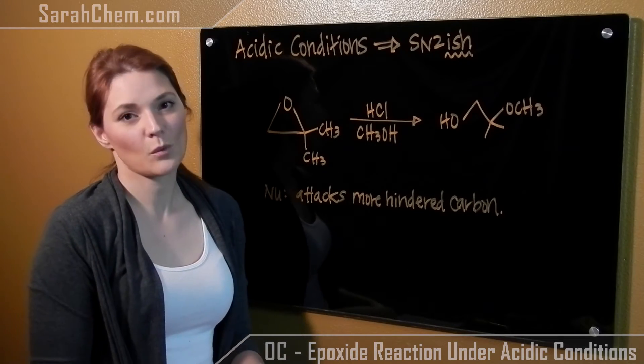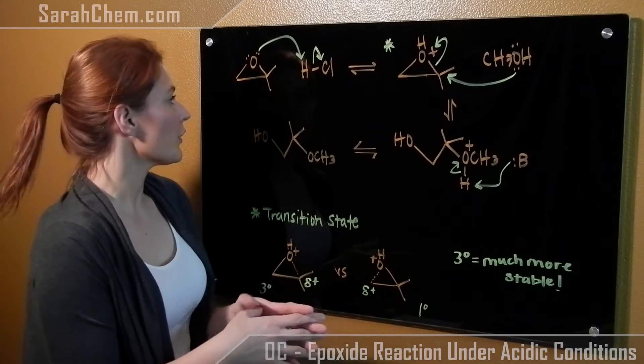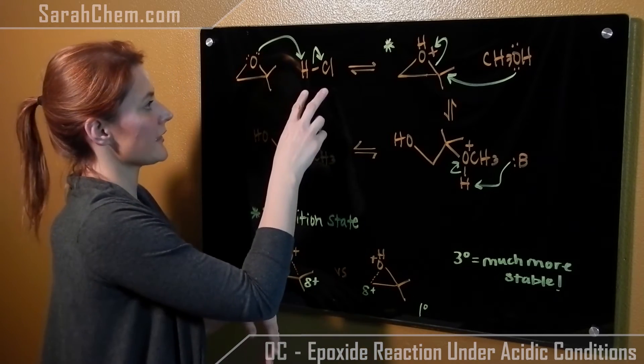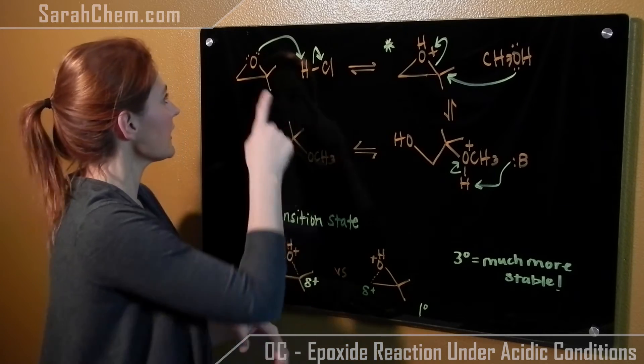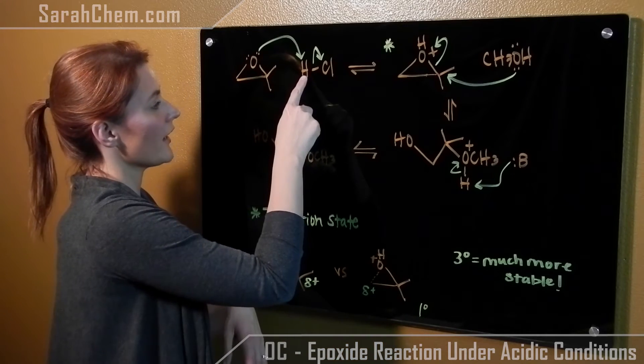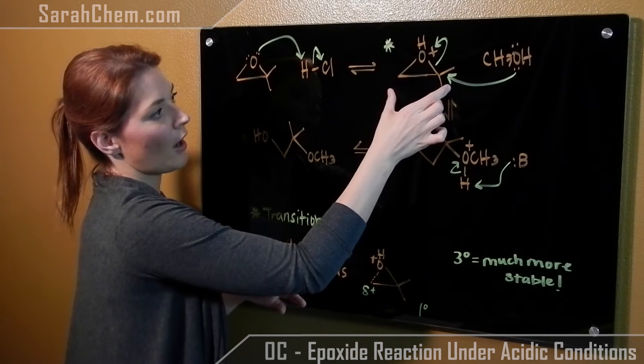So let's take a look at the mechanism to see why that happens. Over here we have our epoxide and an acid. Whenever we have oxygen in an acidic solution, it's going to take its lone pairs, attack the hydrogen, and in this case kick the chlorine off. So what will form then is a protonated epoxide.